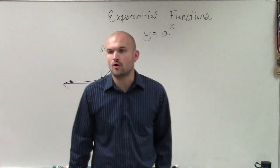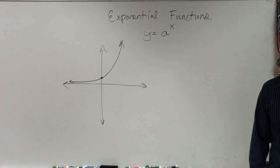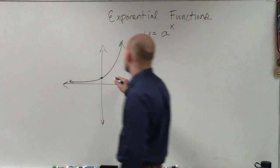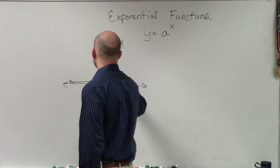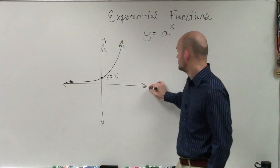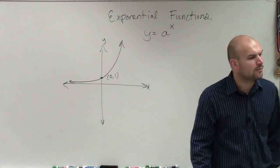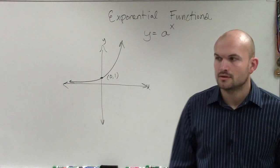That is going to be the general form of y equals a to the x. So there's a couple things I want you guys to understand. First of all, it has a y-intercept. Here's your y-axis, x-axis. It has a y-intercept of 0 comma 1.